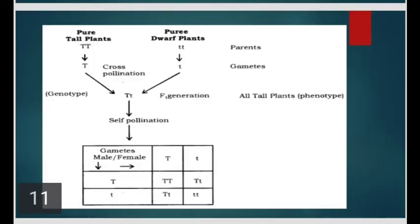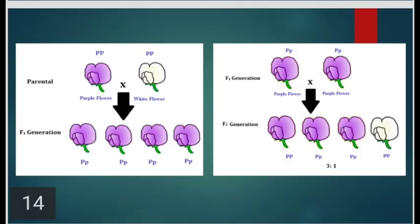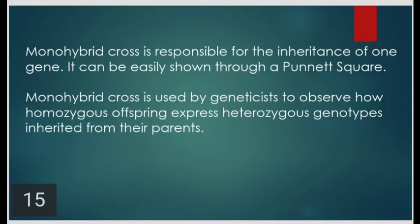This is a diagrammatic representation showing a Monohybrid Cross — that is, a cross between pure tall plants and pure dwarf plants. Another example of a Monohybrid Cross is a cross between a purple-color flower and a white-color flower. A Monohybrid Cross is responsible for the inheritance of one gene and can be easily shown through a Punnett square. It is used to observe how homozygous offspring express the heterozygous genotypes inherited from their parents.